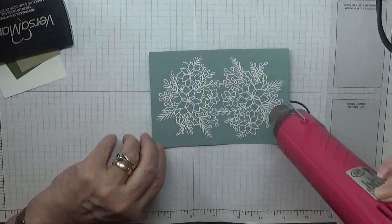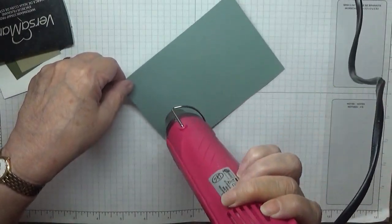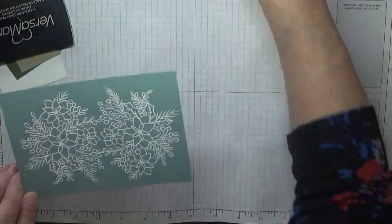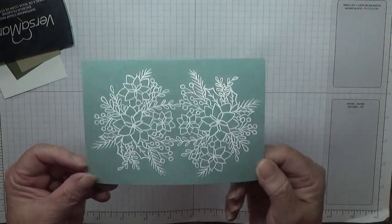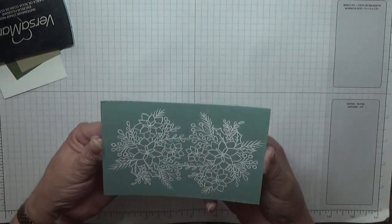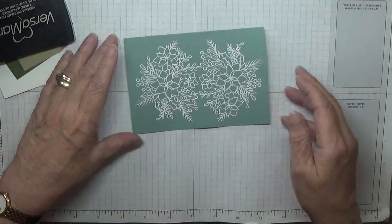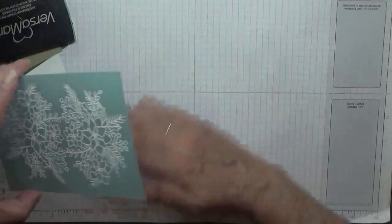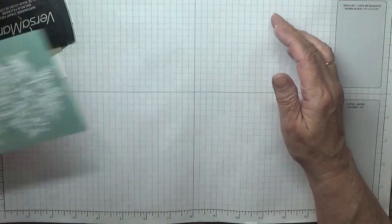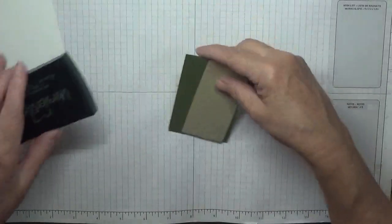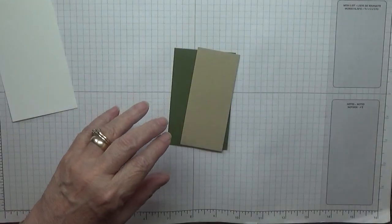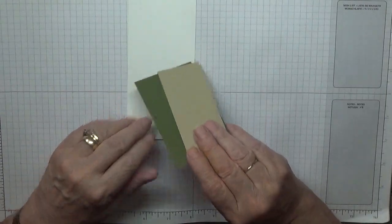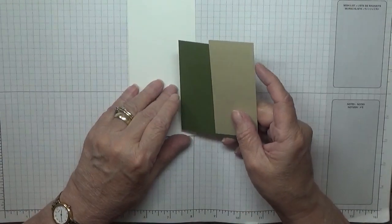There we are, that is our image all heated up, so we'll just leave that to cool now and get on with the rest of our stuff. Now I've warped this, never mind. Put that to one side and now we want to cut out our happy and stamp our Christmas.